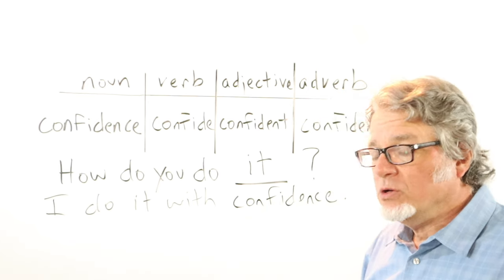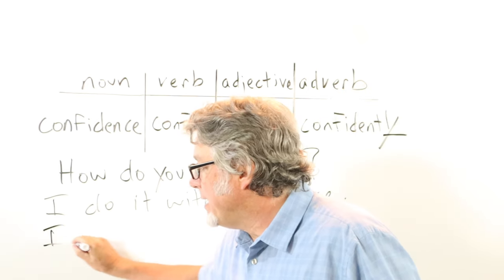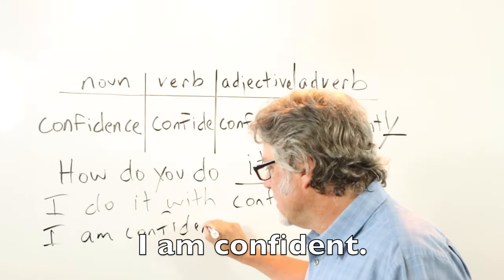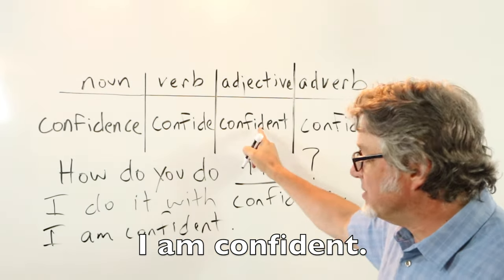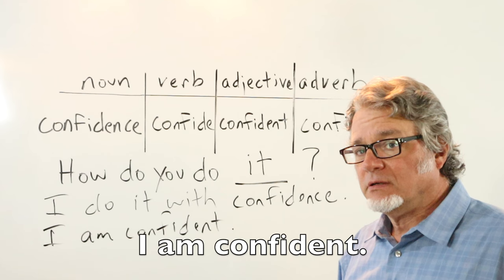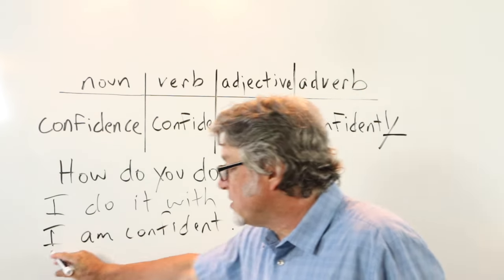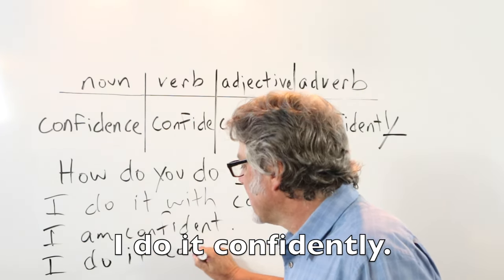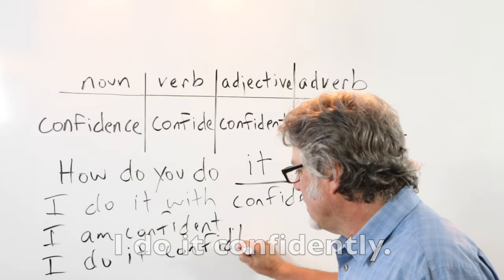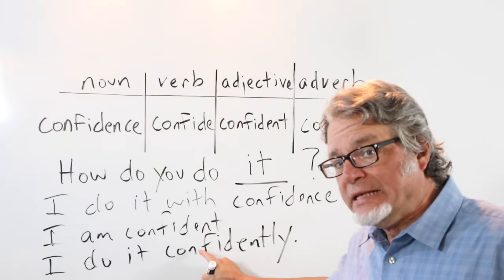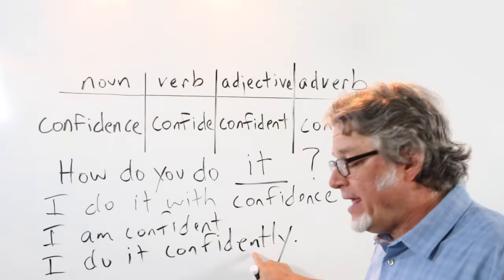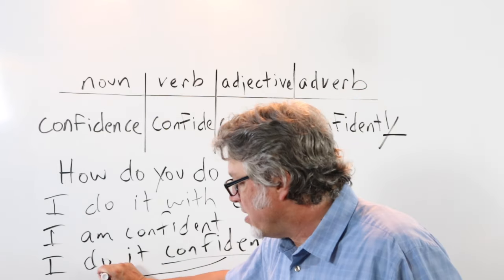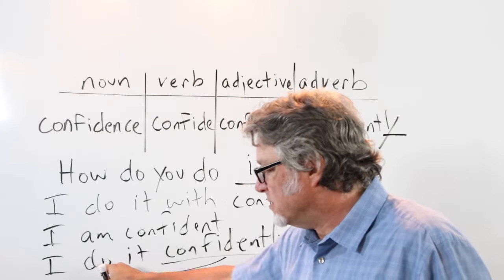Or you can say 'I am confident' — the word confident is the adjective. Or you could say 'I do it confidently.' When you say 'I do it confidently,' here's the adverb, and this is supporting the main verb 'do.'